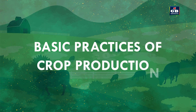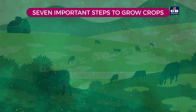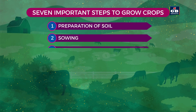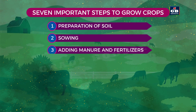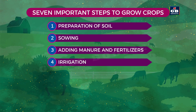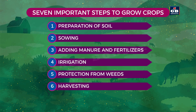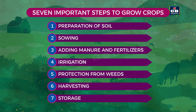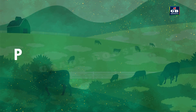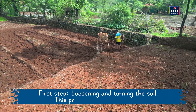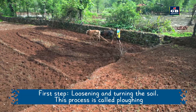Let us see the basic practices of crop production. Farmers follow seven important steps to grow crops: 1. Preparation of soil, 2. Sowing of seeds, 3. Adding manure and fertilizers, 4. Irrigation, 5. Protection from weeds, 6. Harvesting, 7. Storage. Preparation of soil is the first step. It involves loosening and turning the soil.